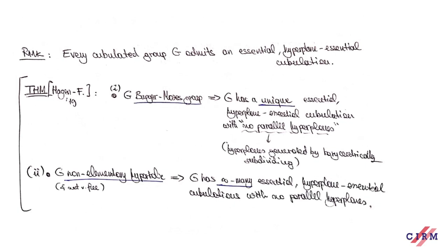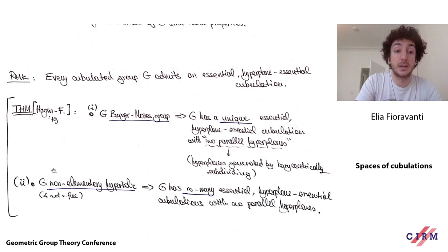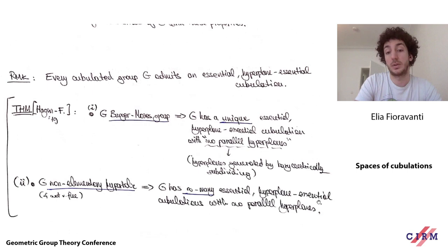This result about lattices uses Chatterji–Fernós–Iozzi super-rigidity, results of Caprace and Monod on automorphism groups of trees, work of Shalom, and also the work of Bergeron–Wise and Bergeron–Wise–Zimmer. Putting everything together with a few lemmas about cube complexes yields the result. Let me point out to conclude: the result for hyperbolic groups is clear if Out(G) is infinite, but many hyperbolic groups have finite outer automorphism groups — for instance all hyperbolic 3-manifold groups, and in general anything not assembled from free groups and surface groups. So you need a different argument in that case. Thank you all for listening.